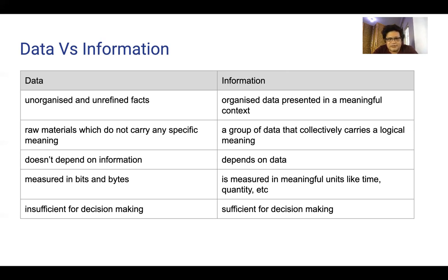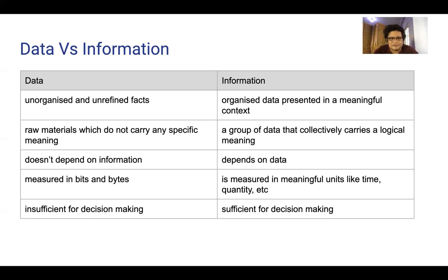Data does not carry any specific meaning on its own. Information is a group of data that collectively carries a logical meaning. Data does not depend on information, but information depends on data.